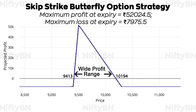Now let's look at the risk graph of the sample skip strike butterfly with puts position. From the risk graph it is clear that the risk reward ratio is pretty high, around 1:6.5. Also, the high reward comes with a wide range. The maximum profit is Rs 52,025 and is attained at the strike price of the sold puts, i.e. at 9,500 at expiration. The breakeven points are at 9,413 and 10,194, and the maximum loss of Rs 7,976 is achieved when the underlying closes below the lower breakeven point or above the upper breakeven point at expiration.